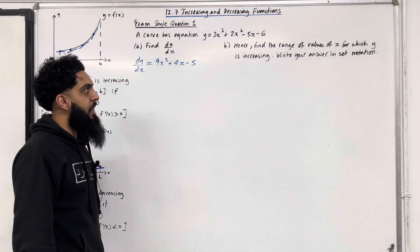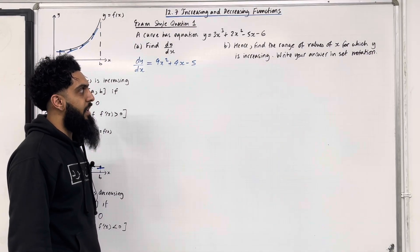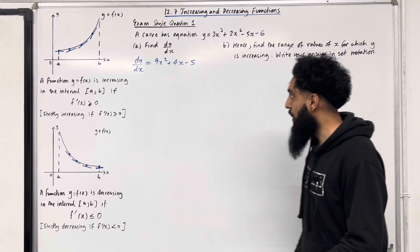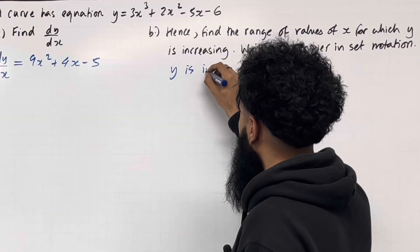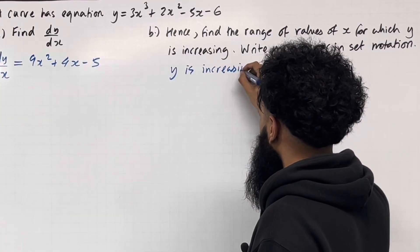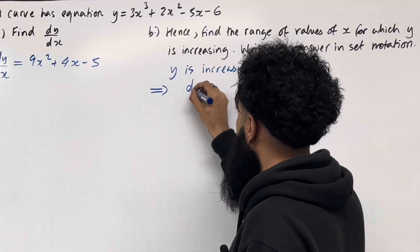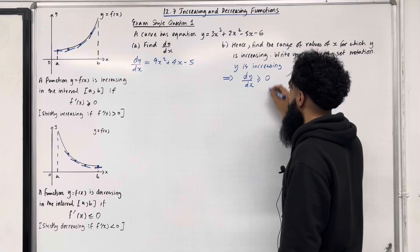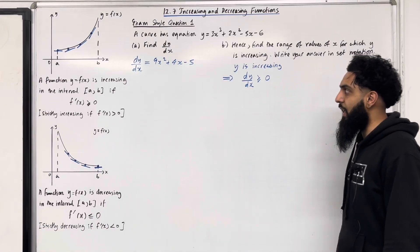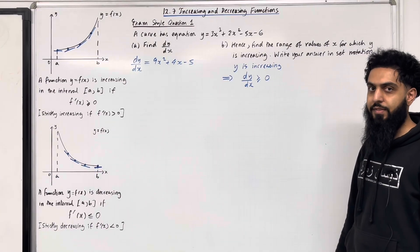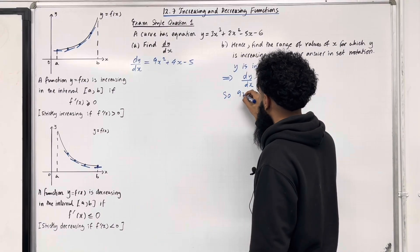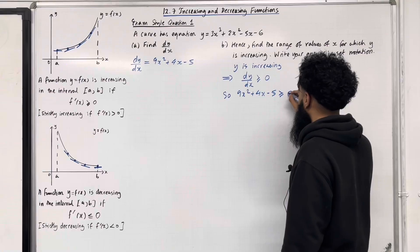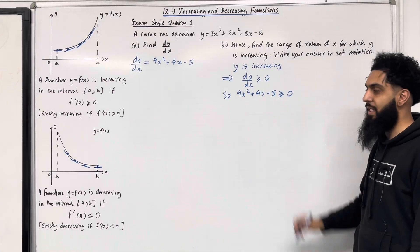Part B: hence find the range of values of x for which y is increasing. Write your answer in set notation. In part B, we are told that y is increasing. This implies that, by definition, the gradient function dy/dx has to be greater than or equal to 0. From part A, dy/dx = 9x² + 4x - 5. So 9x² + 4x - 5 ≥ 0. This generates a quadratic inequality.